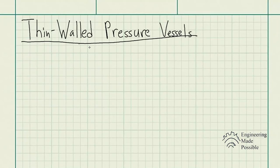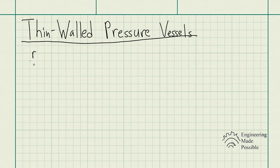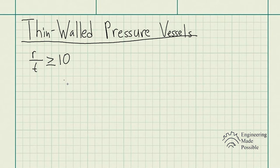Today we'll be going over thin-walled pressure vessels, which are commonly used in industries such as boilers or for transporting fluids in pressurized tanks. When a pressure vessel is considered thin-walled, that means the ratio of the inner radius to the wall thickness must be greater than or equal to 10.